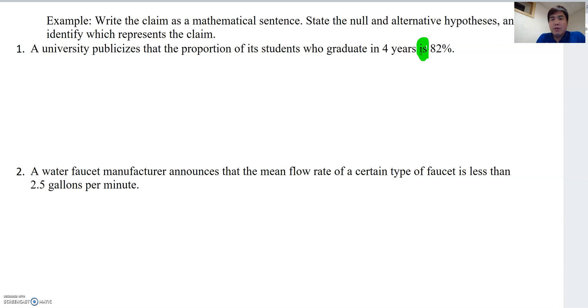Now, because the statement includes our claim, 'is' means equal sign here. When we define this one, H₀ will be the proportion P equal to 0.82. Why H₀ is P equal to 0.82? Because null hypothesis always includes equality. That's the reason. And this will be our claim then, because the statement shows that this is our claim.